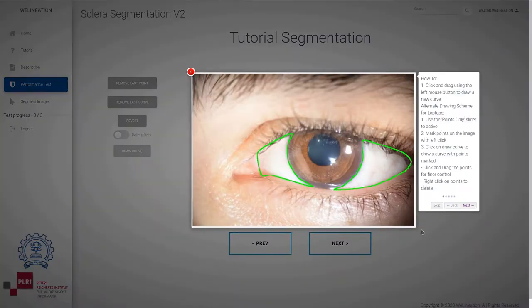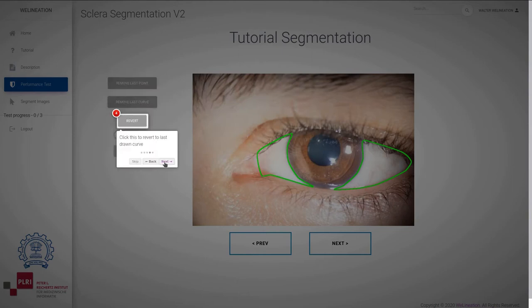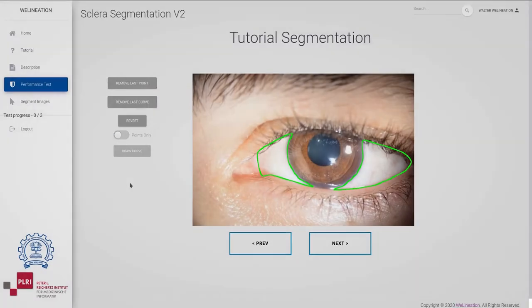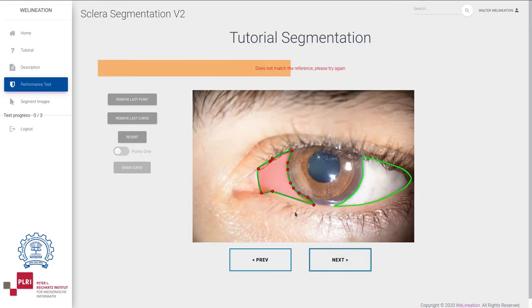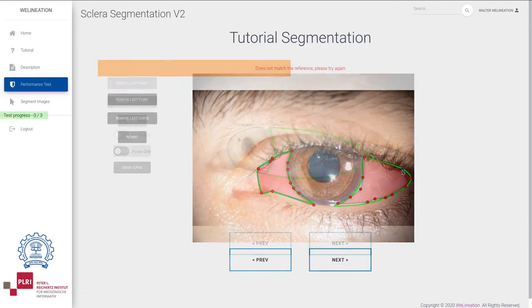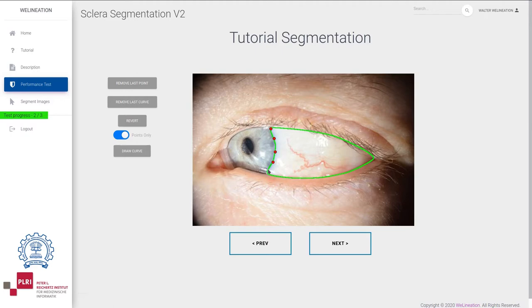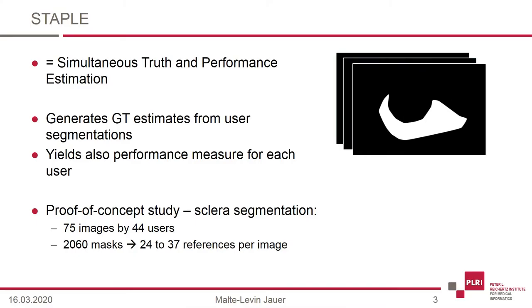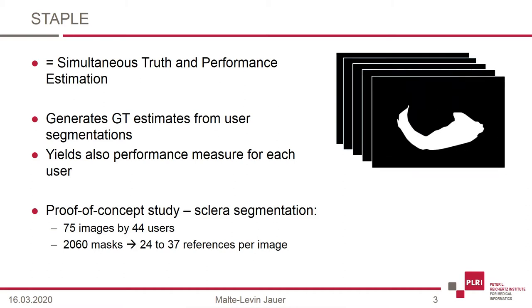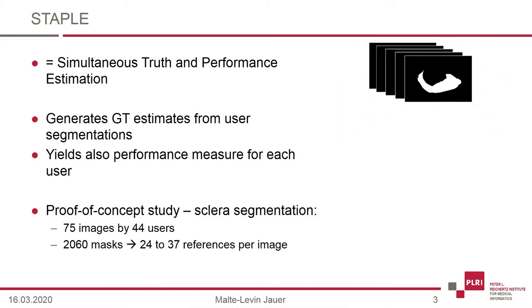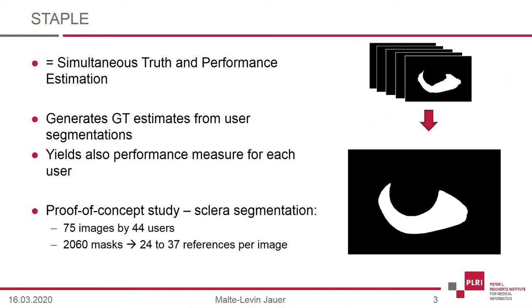After reading the instructions, getting familiar with the controls, and passing a performance test, users can contribute segmentations online either by drawing segmentation curves or by clicking the points necessary to generate the curve. For each image, the simultaneous truth and performance level estimation algorithm generates ground truth segmentation masks from all user contributions and evaluates the user performance.